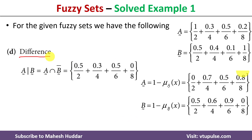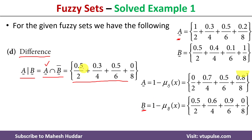The last operation is the difference of two fuzzy sets. The difference of fuzzy set A and B is denoted as A minus B, which can also be written as fuzzy set A intersection the complement of fuzzy set B. We have already calculated the complement of B. Intersection means taking the minimum degree of membership. For element 2, the minimum is 0.5. For element 4, the degree of membership in B complement is 0.6 and in A is 0.3, so 0.3 is the minimum. For element 6, 0.5 is minimum. For element 8, 0 is minimum.